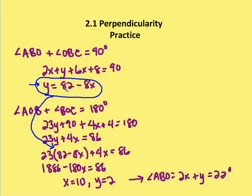Now that x equals 10, we plug that back in. y equals 82 minus 8 times 10, which gives y equals 82 minus 80, so y equals 2. Going back to the original question — the measure of angle ABO equals 2x plus y, which is 2 times 10 plus 2, or 20 plus 2, which equals 22 degrees.